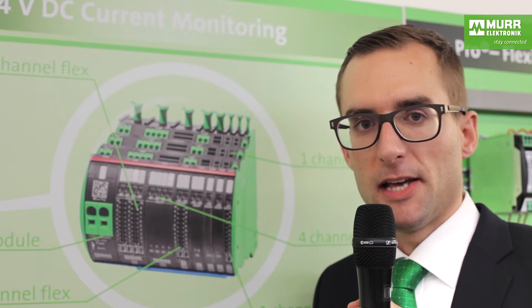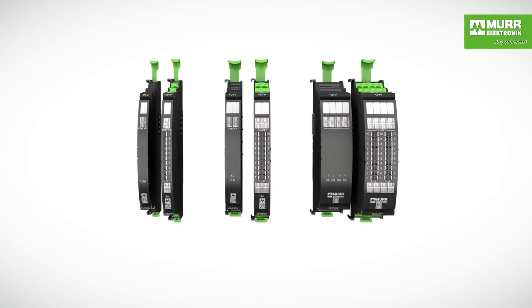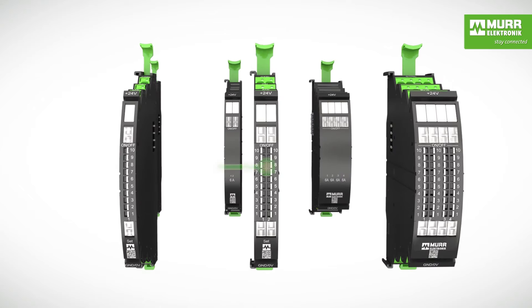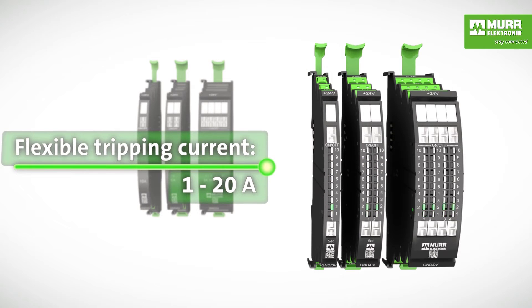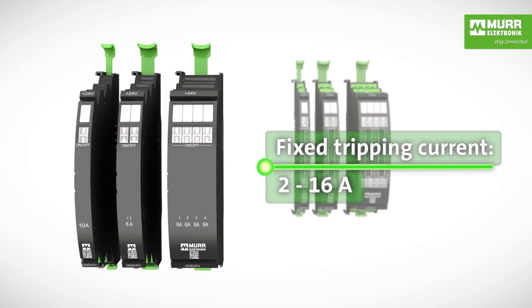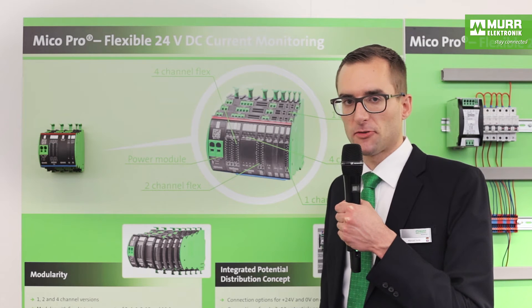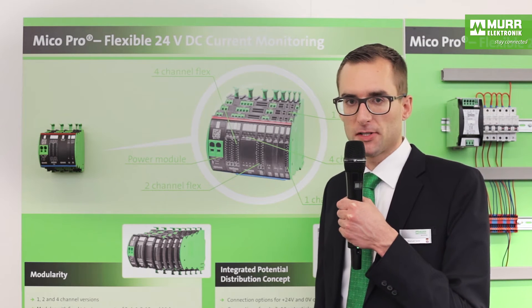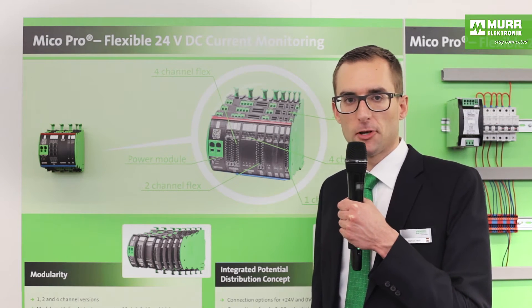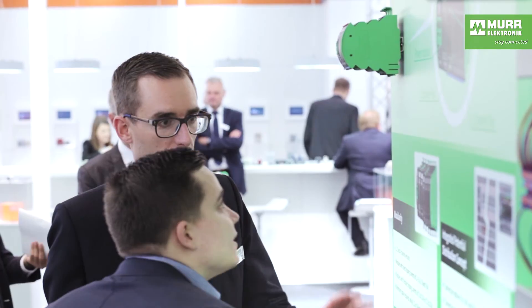These modules are available as adjustable versions where you can adjust the tripping current from 1 up to 10A, as well as from 11 up to 20A. On the other hand, we offer fixed versions where the tripping current is prefixed from 2 up to 16A. Within this system you can choose from all these modules and combine your EDI configuration for your application.